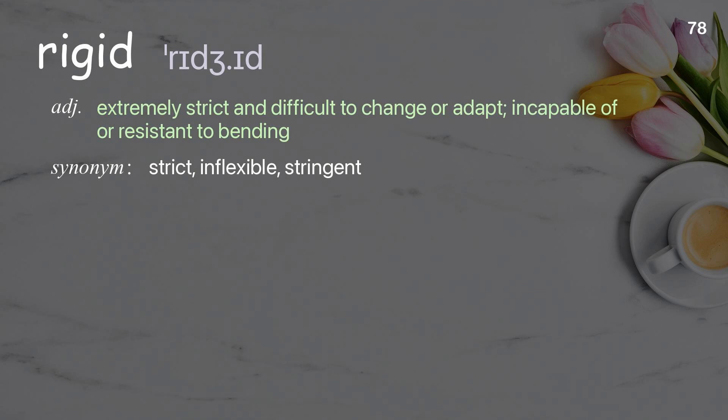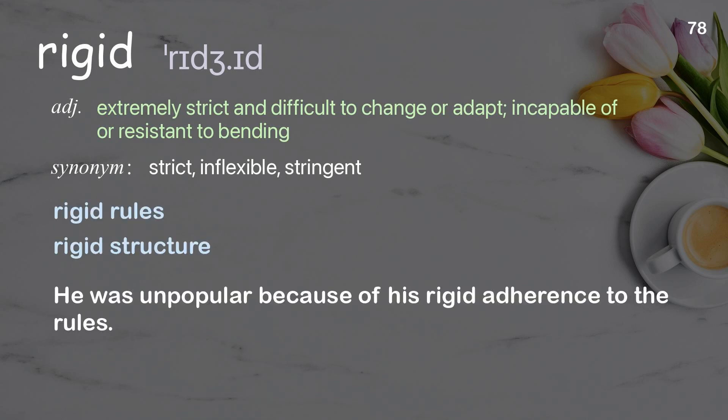Rigid: extremely strict and difficult to change or adapt; incapable of or resistant to bending. He was unpopular because of his rigid adherence to the rules.